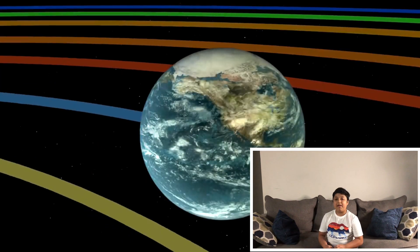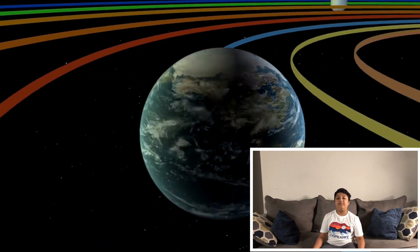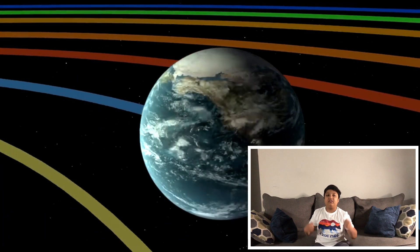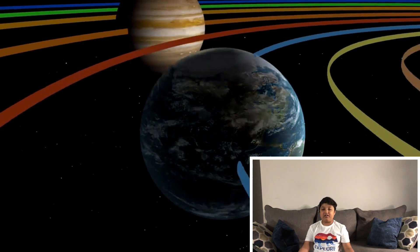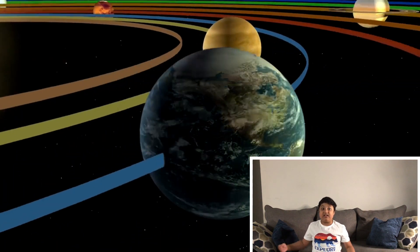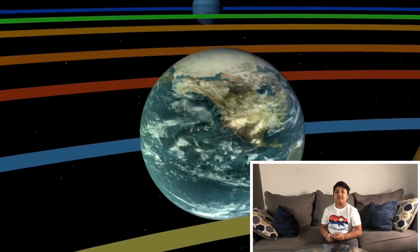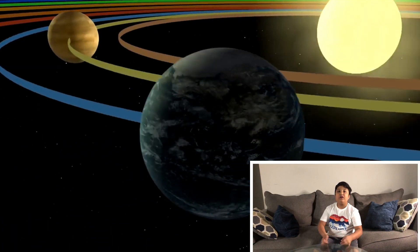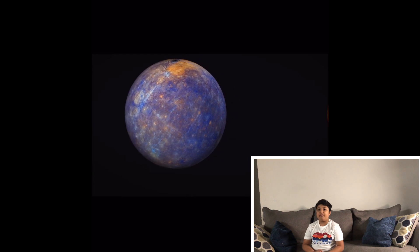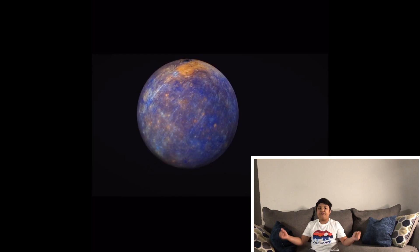Nothing could survive on the Sun. The Sun gives us heat and light and it burns millions of degrees in its center. Let's leave the Sun and explore the planets.